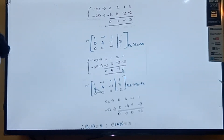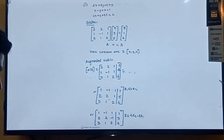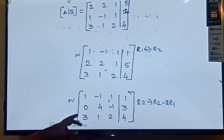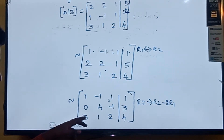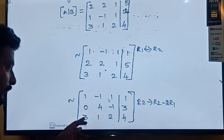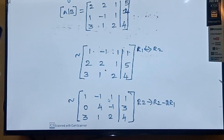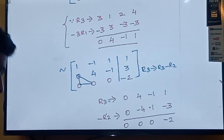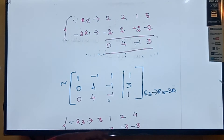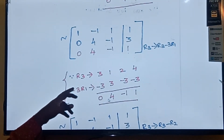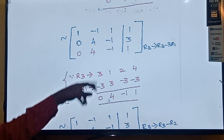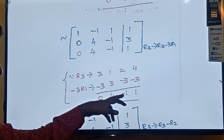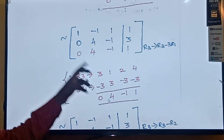Next, R3 first element must also be 0. Here R3 first element is 3, so I am making the change using the operation R3 tends to R3 minus 3R1. R3 values are 3, 1, 2, 4; minus 3 into R1 gives minus 3, plus 3, minus 3, minus 3. Adding: 3 minus 3 gives 0, 1 plus 3 gives 4, 2 minus 3 gives minus 1, 4 minus 3 gives 1. So R3 becomes 0, 4, minus 1, 1.